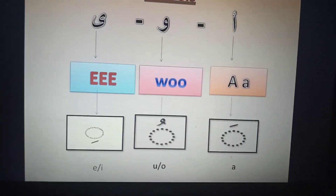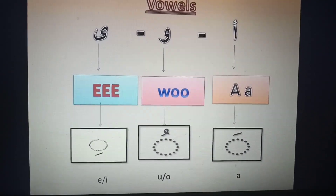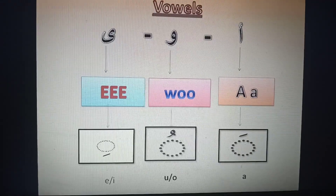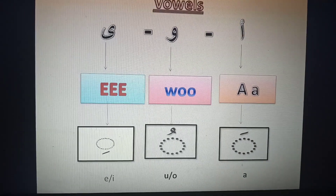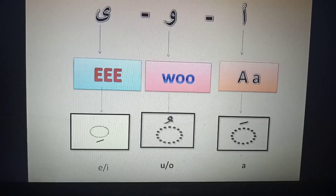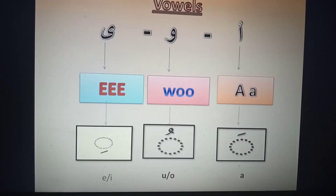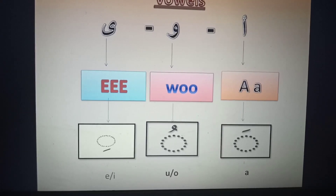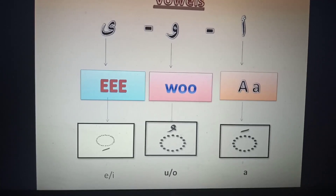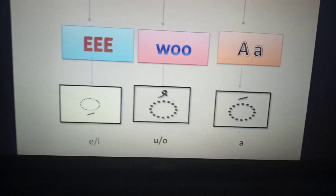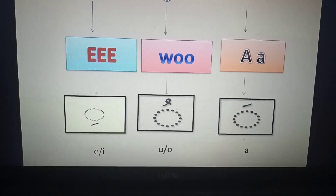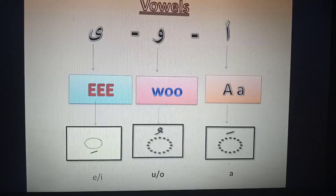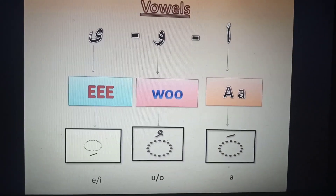The fatha is derived from the alif, which makes an 'a' sound. From the waw, we can derive the dhamma, which is a miniature waw, making a 'u' or 'o' sound. From the letter ye, we can derive the kasra, which makes an 'e' or 'i' sound. So the three short vowels are: fatha (a sound), dhamma (u or o sound), and kasra (e or i sound). These are derived from the three vowels of the Arabic alphabet.